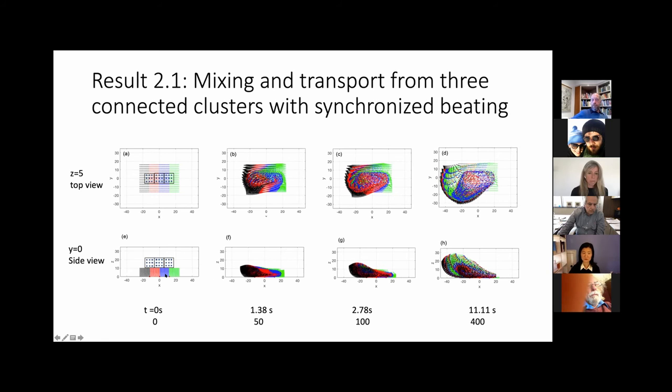In 11 seconds, you can see some green particles on the right most now travel very far to the left. So there's a lot of mixing and there's some segregation of color stripes. If you look at the side view, you can see lots of mixing and also some transport upwards.